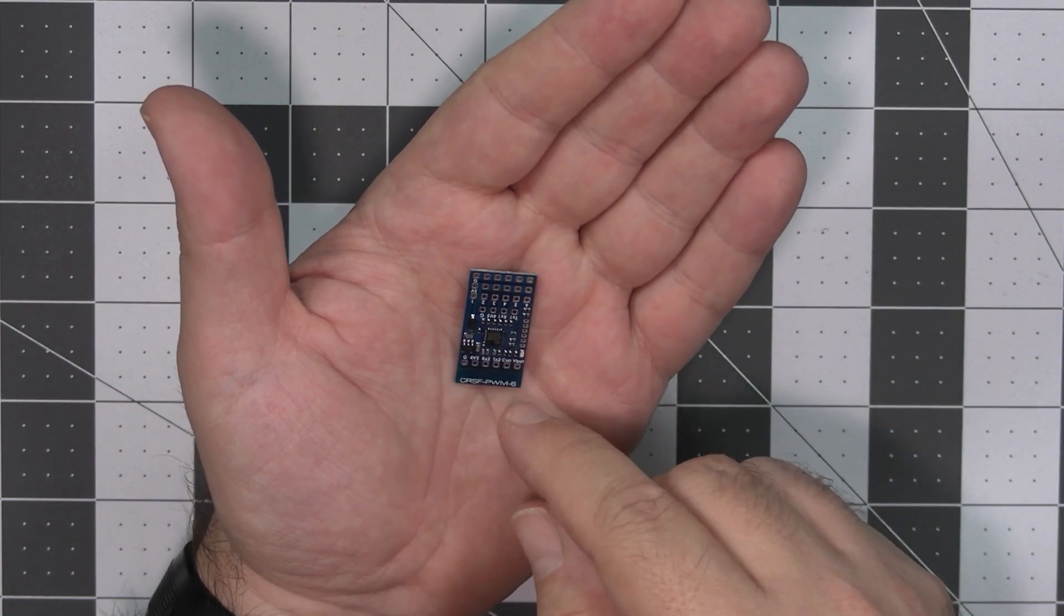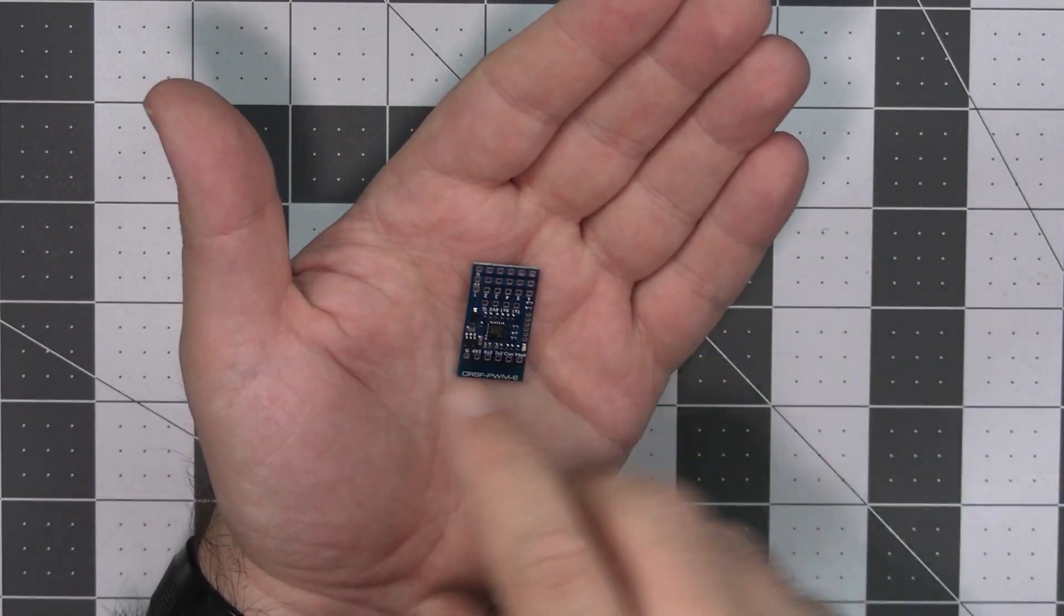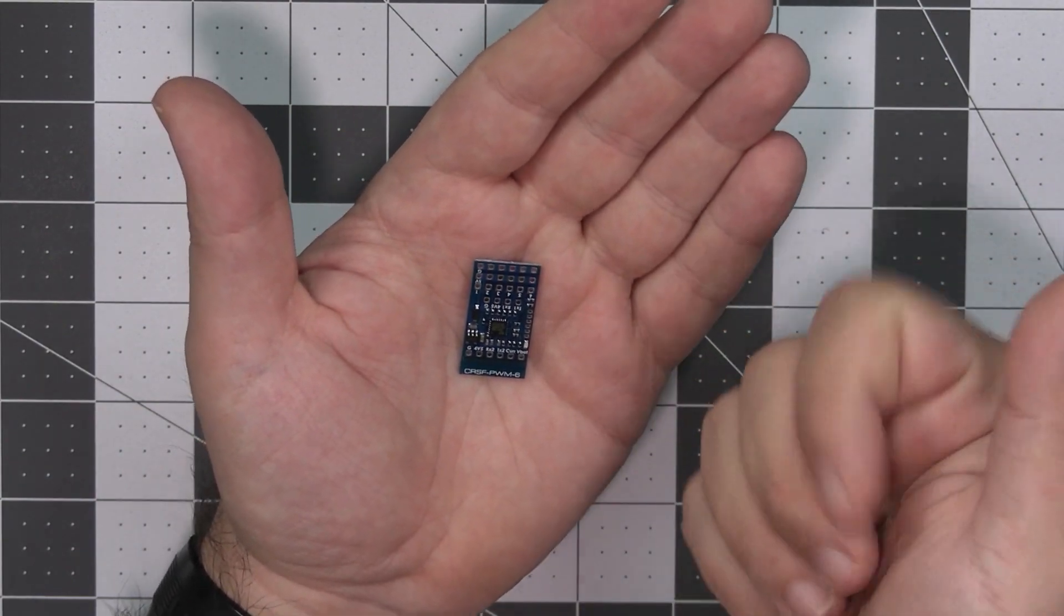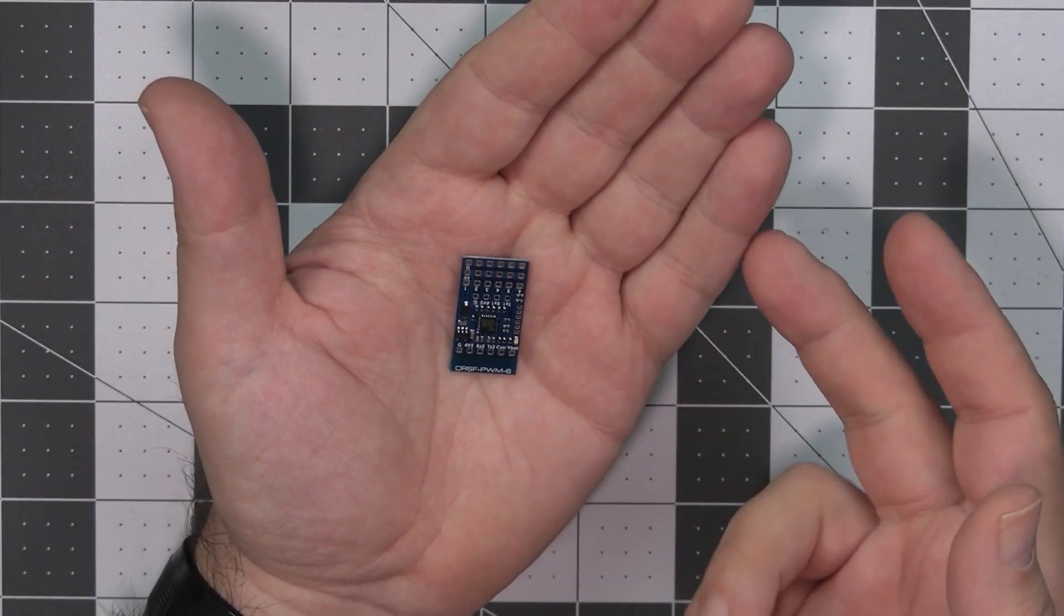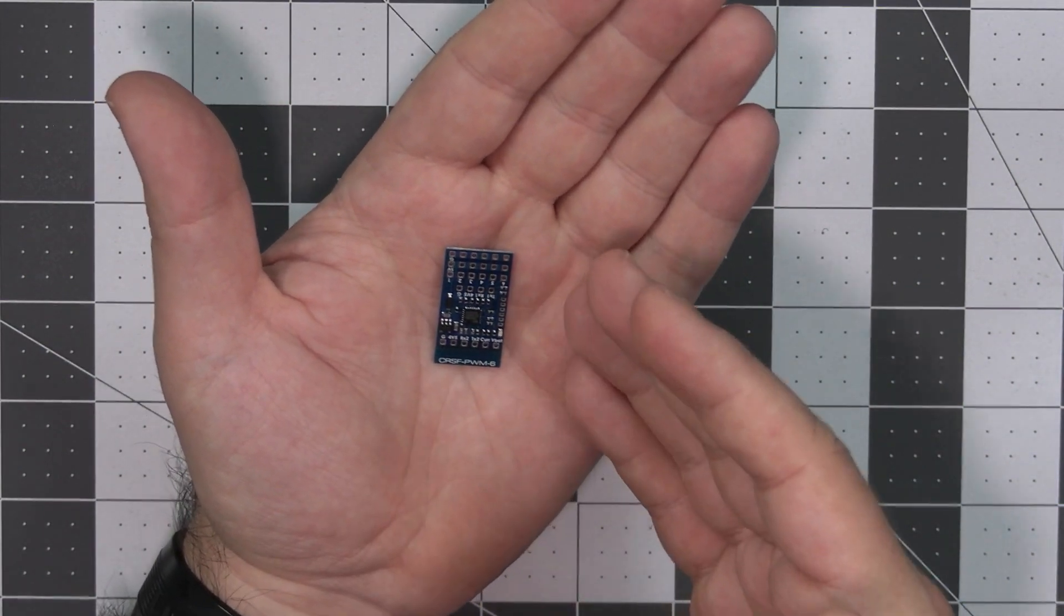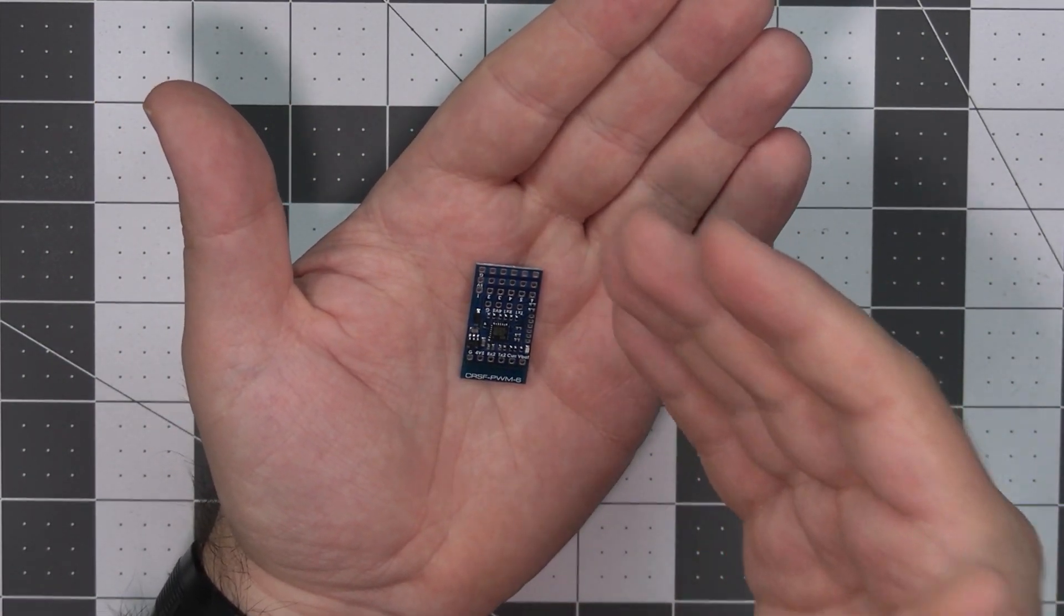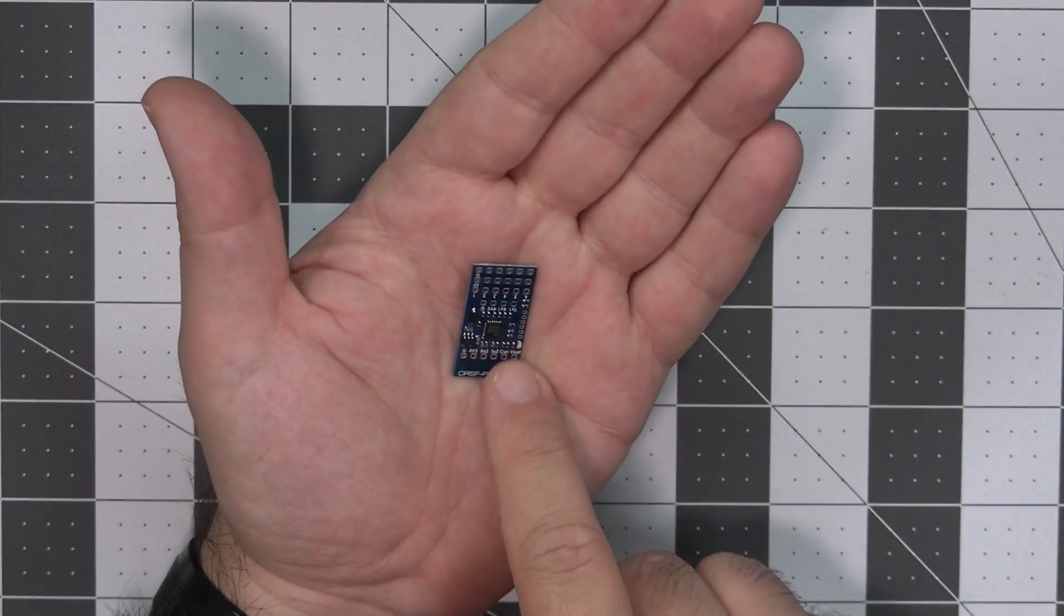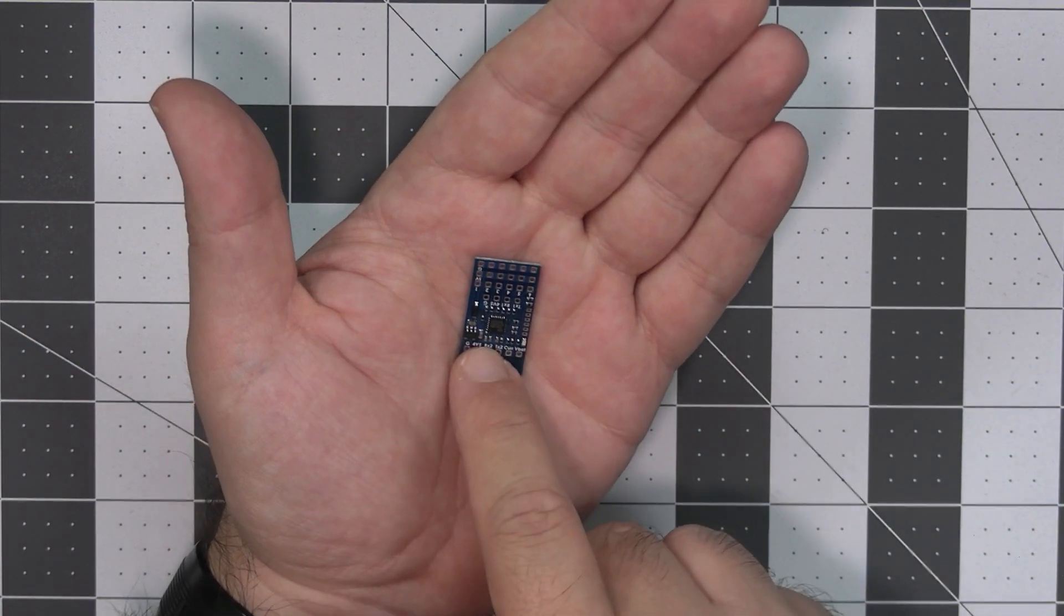So, you can connect servos directly, almost directly to the CRSF compatible receiver, Crossfire, Tracer or Express LRS and fly without any flight controller. This is simple, this is nice, something that, for example, SBUS to PWM converter, we had this for years. Now, Matek joins the race with the Crossfire to PWM,